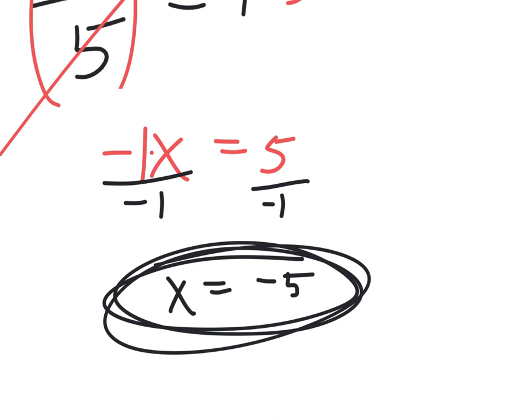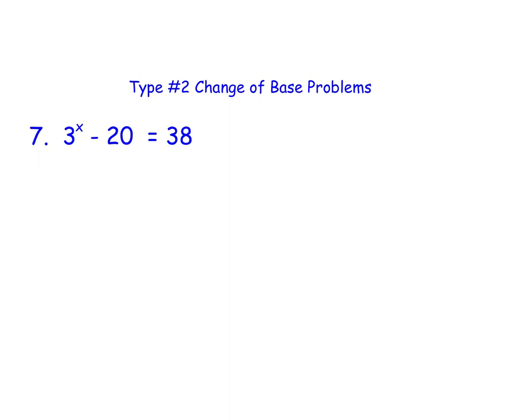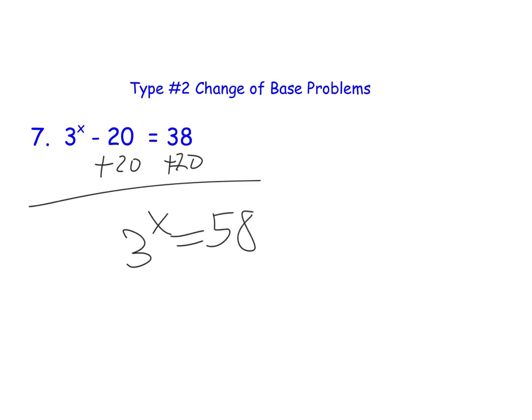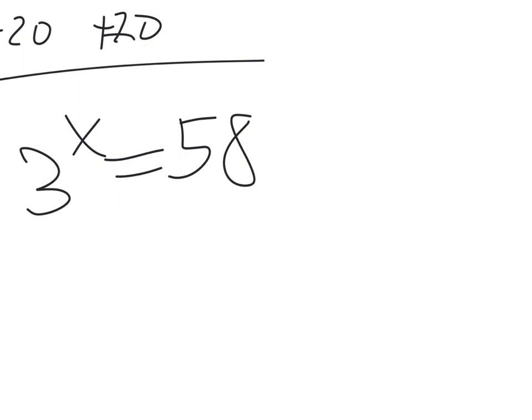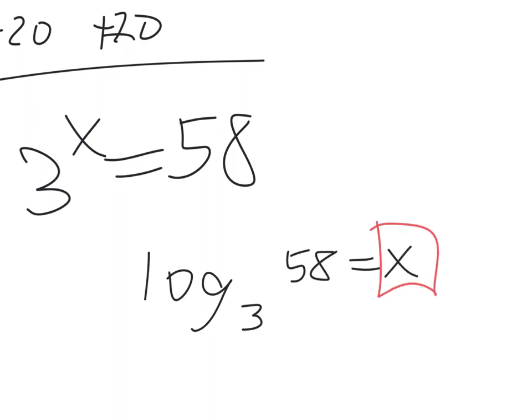I think you get it. If you can't make the bases the same, then you're going to have to use logs. For instance, 3 to the x equals 58 — I can't think of 3 to the anything that makes 58, so I'm going to have to use logs. Log base 3 of 58 equals x. Done. How am I done? Because x is alone. We aren't doing any expanding or condensing today — we did it for two days in a row.